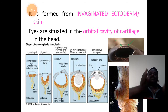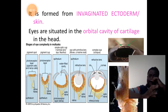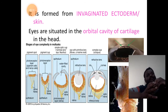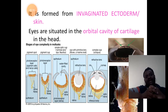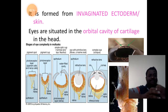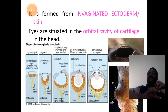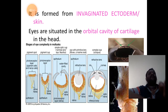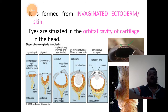Eyes are situated in the orbital cavity — the place where eyes are positioned is called the orbital cavity. In the case of cephalopod, the orbital cavity is made up of a cartilaginous ring.